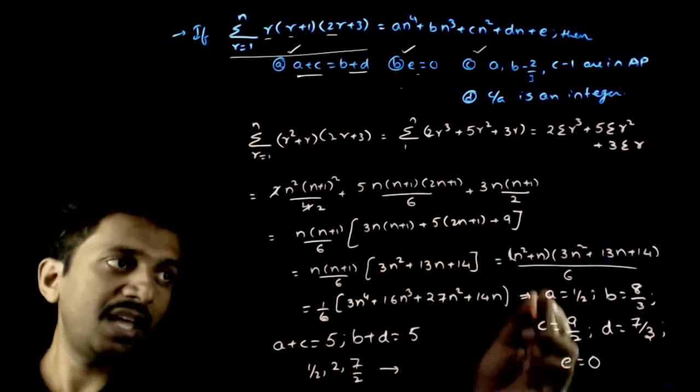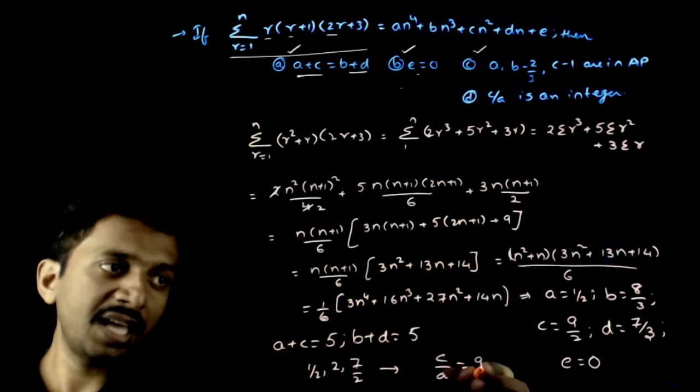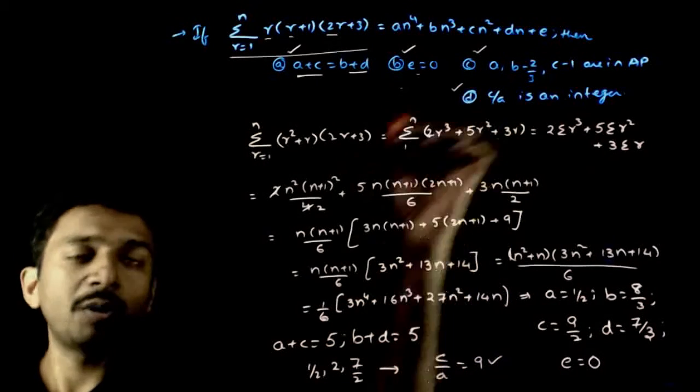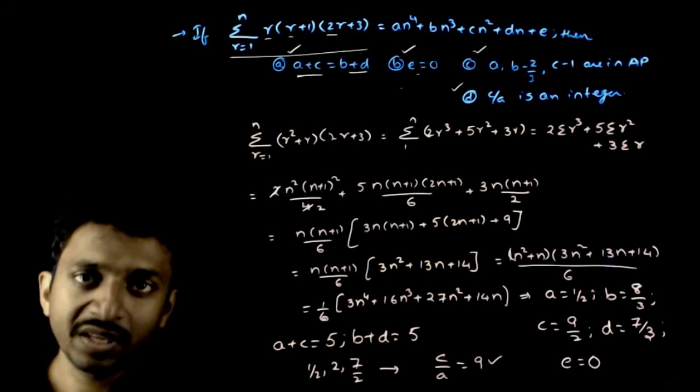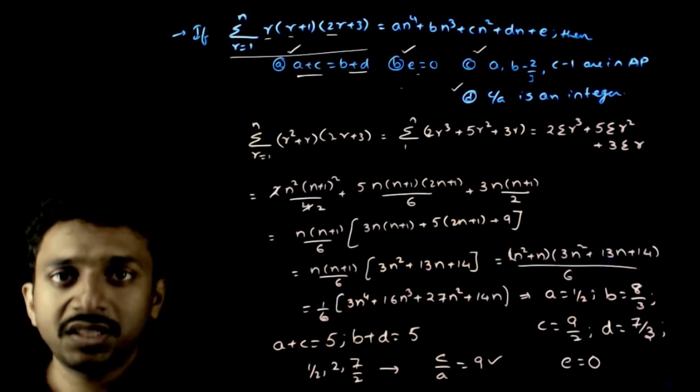Fourth, c by a is an integer. c by a equals 9 by 2 by 1 by 2 is 9, so c by a is an integer. Option D is also right. So all the options a, b, c, d are right answers. Thank you.